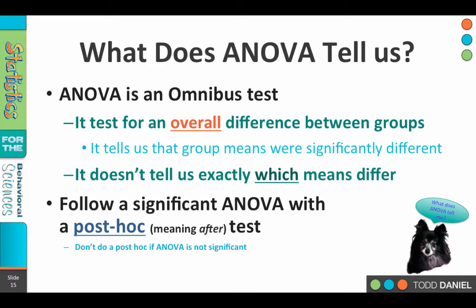The ANOVA is what is called an omnibus test. It tests for overall differences among a variety of groups. So if we have three or four groups, we know that differences exist somewhere, but we don't know exactly where. At least one of those groups has to be different from the others, but we don't know which one.